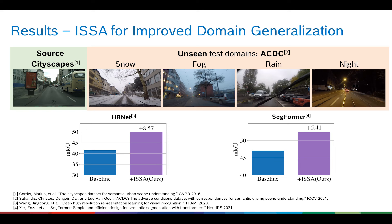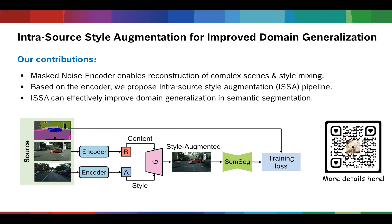More experimental results, including comparisons with other data augmentation and style mixing methods on more datasets, can be found in our paper. To summarize our contributions, we propose a GAN inversion encoder — the mask noise encoder — which ensures reconstruction quality on complex driving scenes and facilitates style mixing ability. Further, we exploit GAN inversion for intrasource augmentation, the ESA pipeline.